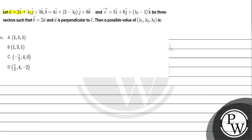Let vector a equal to 2i-cap plus 3k-cap, and vector b equal to 4i-cap plus (2 minus lambda-2) times 3 j-cap plus 6k-cap, and vector c equal to i-cap plus 6j-cap plus (lambda-3 minus 1) k-cap. These are vectors such that vector b is equal to 2 times vector a, and vector c is perpendicular to vector a. The possible values of lambda-1, lambda-2, lambda-3 are given as options: A is (1,5,1), B is (1,3,1), C is (-1/2, 4, 0).